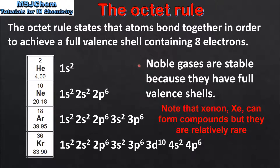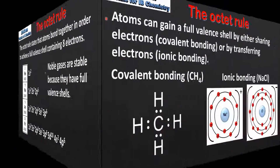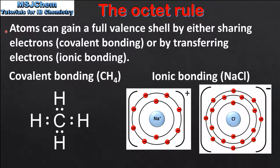An important point to note is that noble gases are stable in that they don't form compounds because they have full valence shells. Next we'll have an introduction to two types of bonding. Atoms can gain a full valence shell by either sharing electrons, which is covalent bonding, or by transferring electrons, which is ionic bonding.